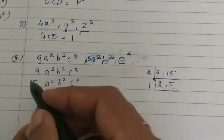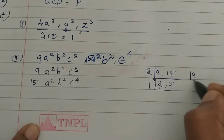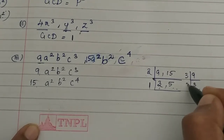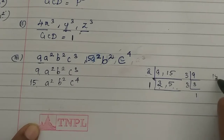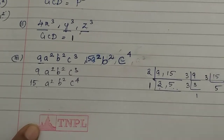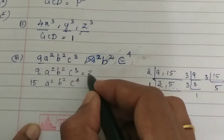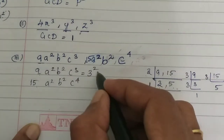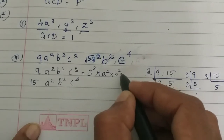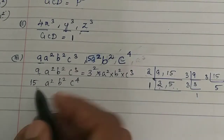Writing out: 9 equals 3 times 3, which is 3 squared. And 15 equals 3 times 5. So the GCD of 9 and 15 is 3.